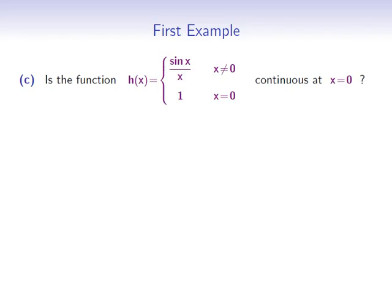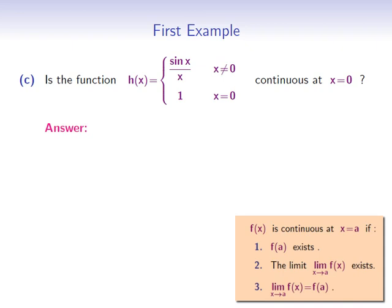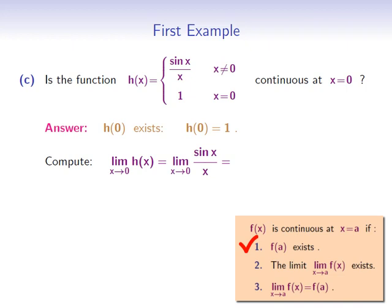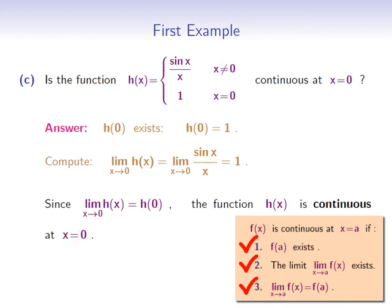Part c: is the function h of x given by sin x over x for non-zero x's, and 1 for x equals 0, continuous at x equals 0? Again, we need to check the three conditions. From the definition of h, h of 0 exists and equals 1, so the first condition holds. Next, we compute the limit of h of x as x goes to 0. Since h of x is sin x over x for non-zero x's, this limit equals the limit of sin x over x as x goes to 0. This is a known fundamental trigonometric limit equal to 1. The limit at 0 equals the value of h at 0, so all three conditions hold and h is continuous at x equals 0.